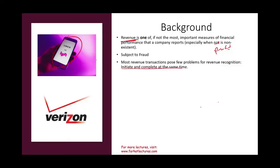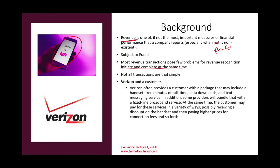However, not all transactions are that simple. For example, if you sign up for a plan with Verizon, they provide you with the phone, talk time, data download, and text messaging — one deal with many components. They might also bundle a fixed-line broadband service, and give you the option to upgrade at a discount. How do we account for this revenue transaction? You are buying many things that could affect the future revenue of that contract, which is why we need rules for recording revenue in such situations.